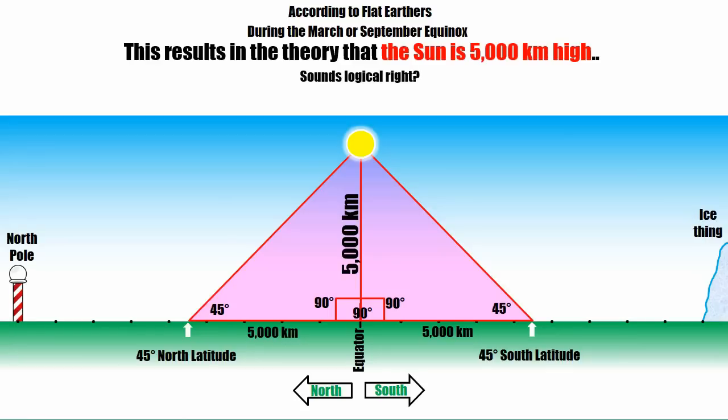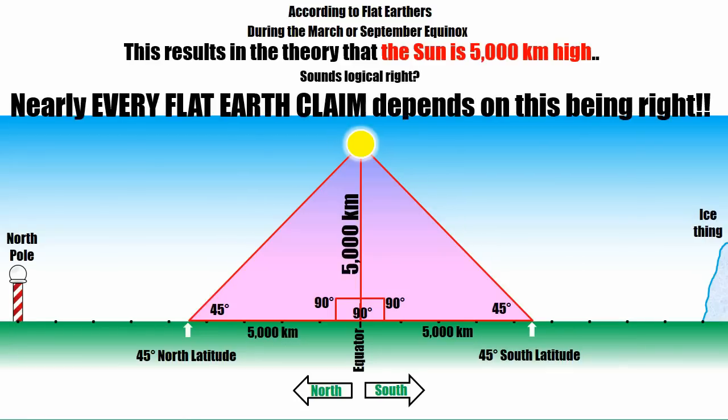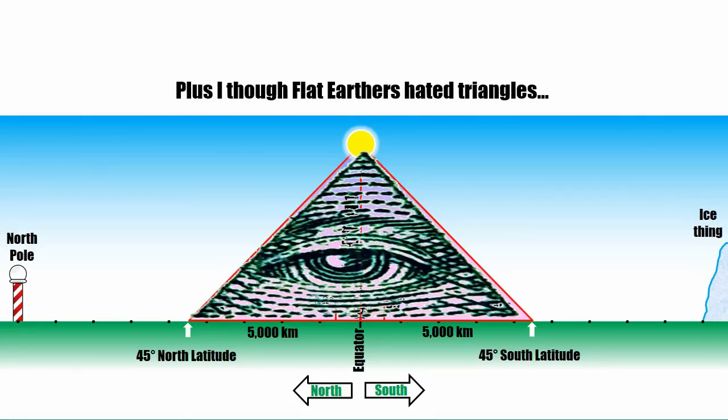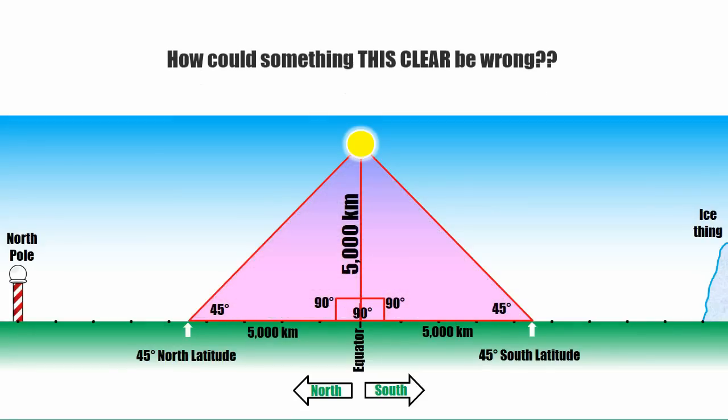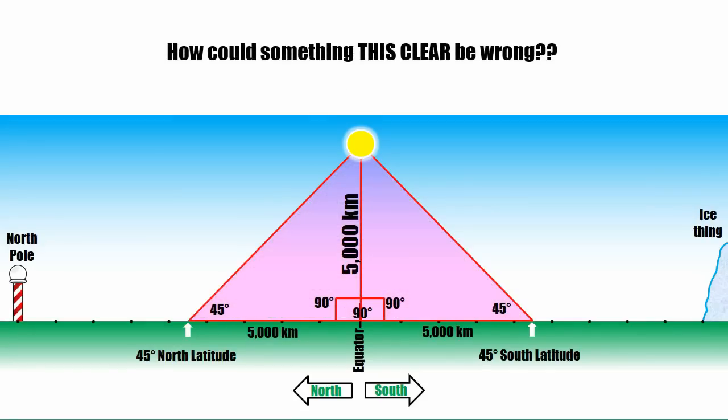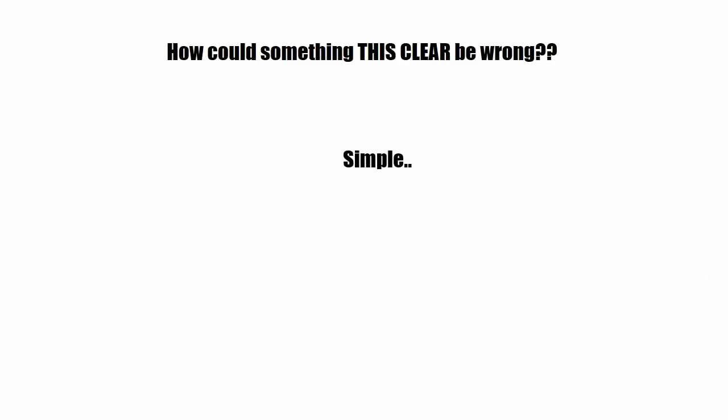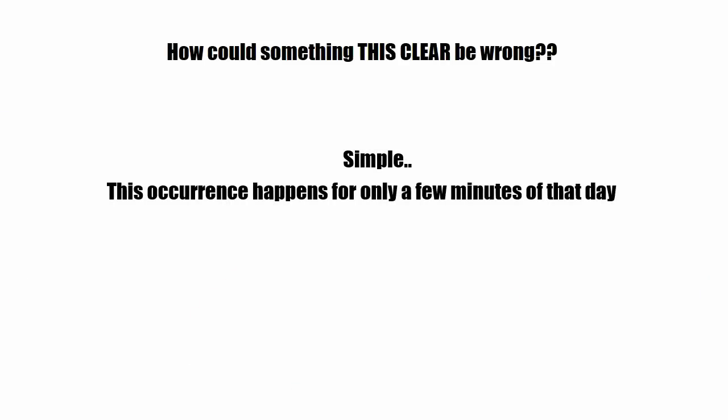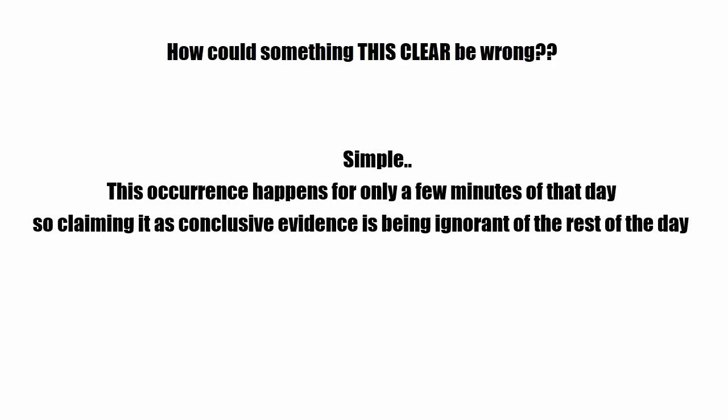Sounds logical, right? And to be honest, almost every flat earth claim depends on this being fact. I kind of thought that all flat earthers hated triangles anyway. So how could something this clear be wrong? Well, it's simple. This occurrence happens only for a few minutes of the measured day, so claiming it as conclusive evidence is being completely ignorant of the rest of the day. It also means that it's not only partial, but it's a completely worthless claim.